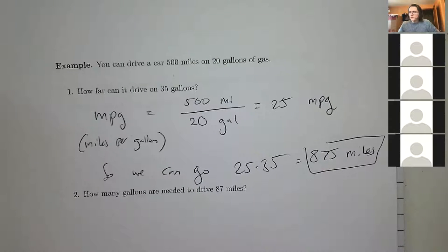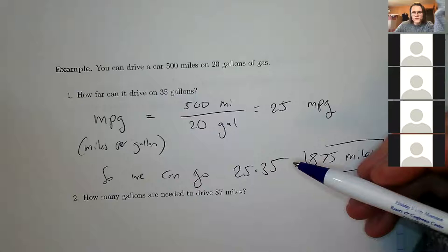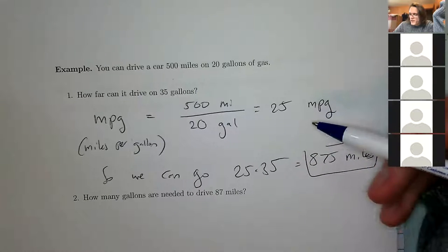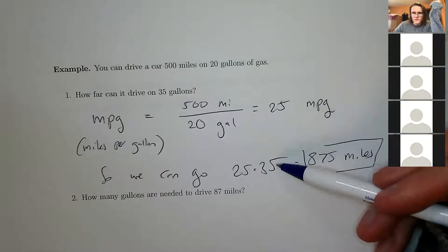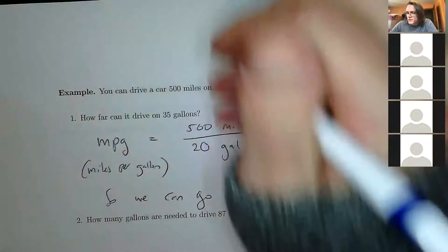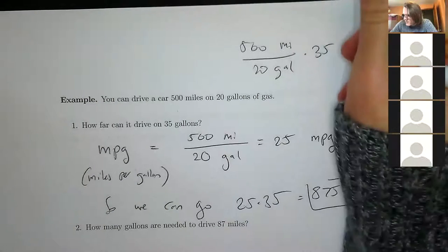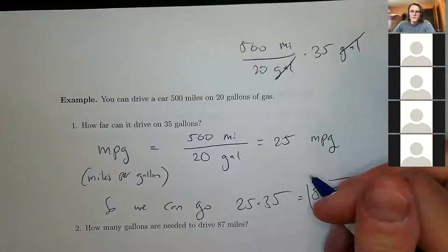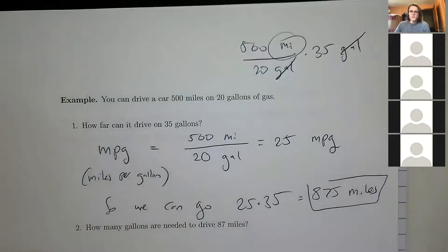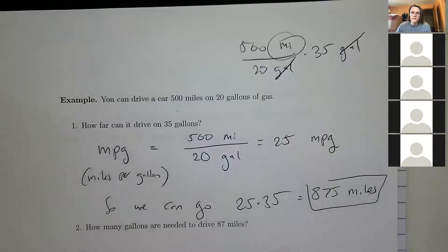You can also justify this using unit analysis. If you write (500 miles / 20 gallons) × 35 gallons, the gallon units cancel and you're left with miles. That confirms that multiplying MPG by a number of gallons correctly gives miles — the units are right. It's almost like magic.